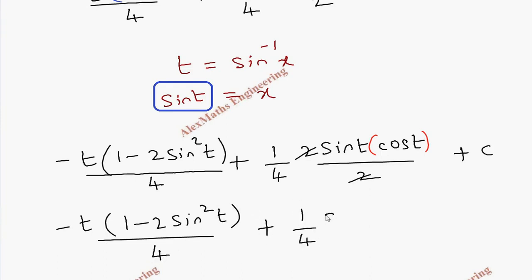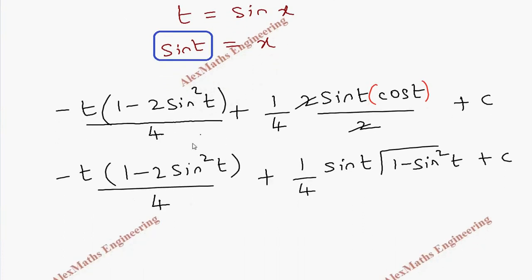Then plus 1 by 4 sin t, this cos t can be written as root 1 minus sine square t. Now completely I got in terms of sine t and I will replace that with x, and t is sine inverse x.